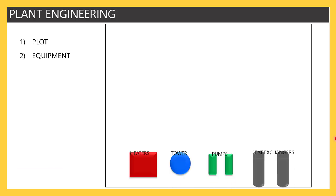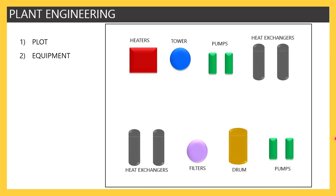Then we have equipment placement. We have seen various equipment in the PFD — heaters, towers, pumps, heat exchangers — and those need to be placed. Arranging equipment also has design conditions; it must qualify safety procedures and guidelines. It is a primary task that requires certain types of evaluation, not a simple task. Only then will you be able to plan the space for the entire unit.